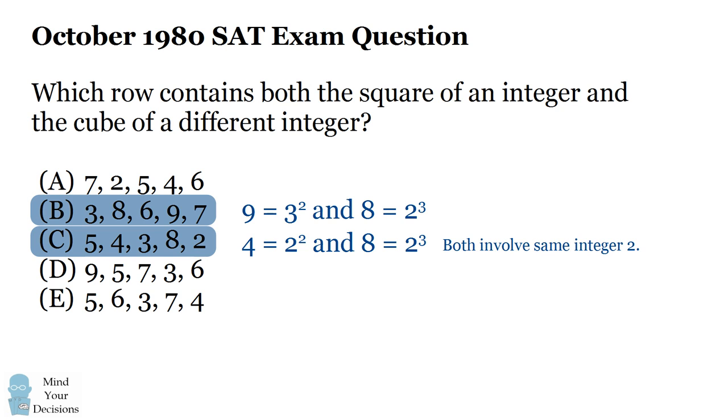However, it was the test makers who made the mistake. When they said you want to have the square of an integer and the cube of a different integer, they forgot that integers can be both positive or negative.